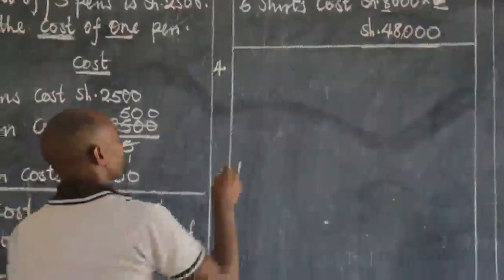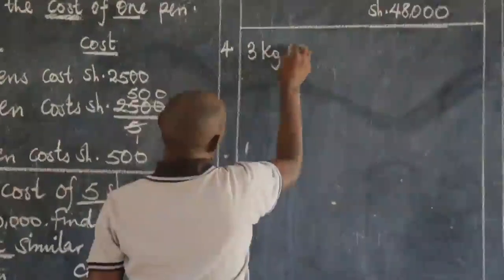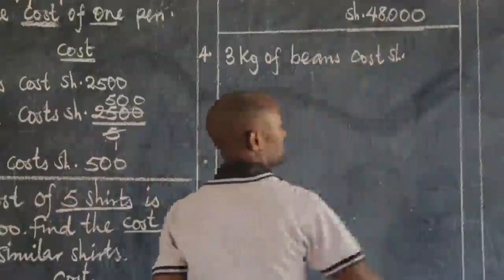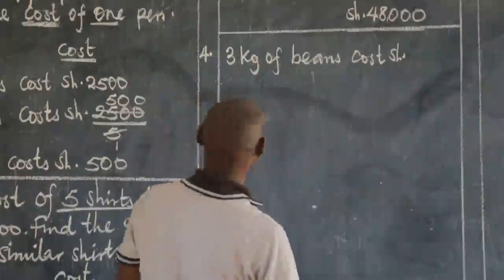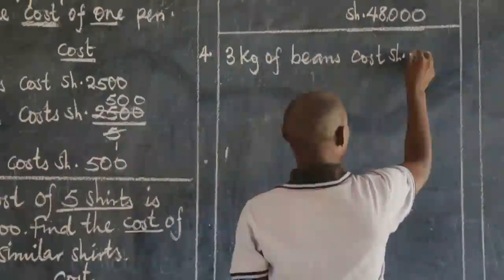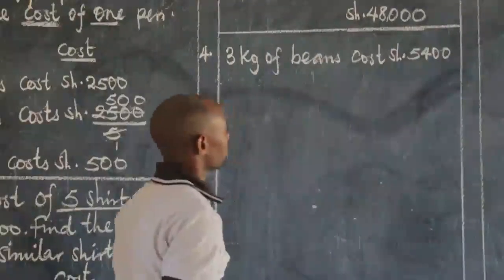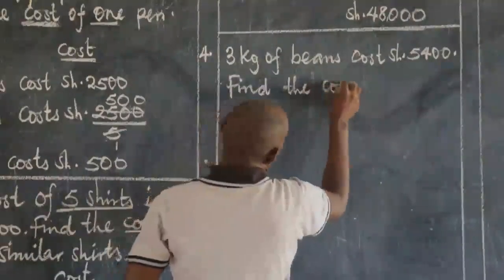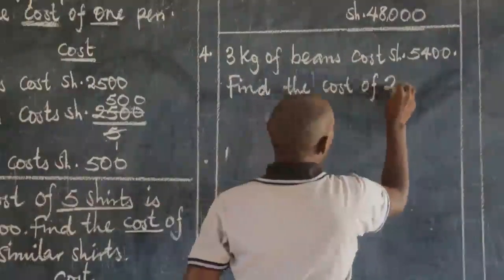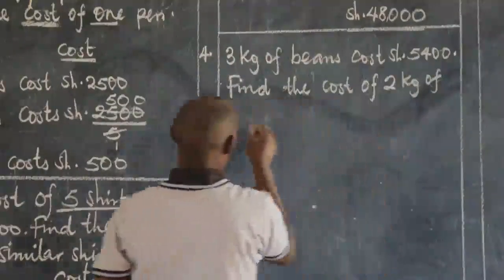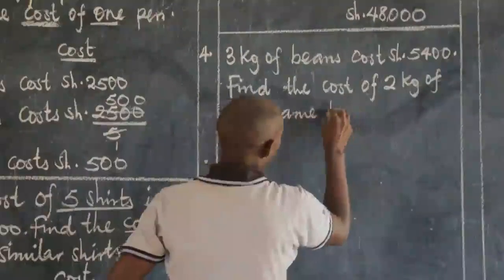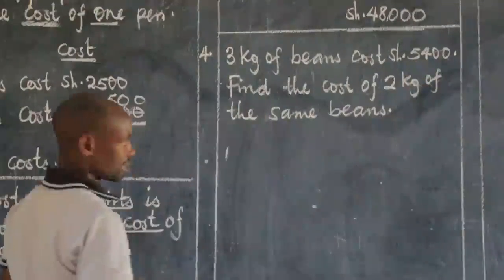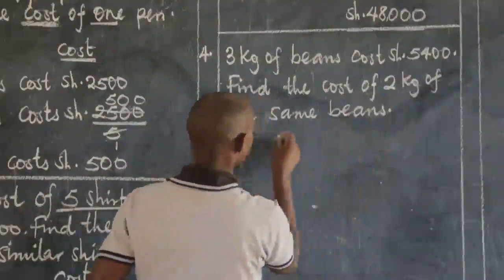Let's have another example — number four. Three kilograms of beans cost 5,400 shillings. Find the cost of two kilograms of the same beans.